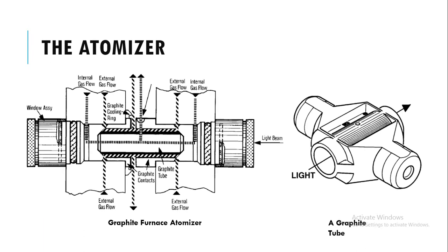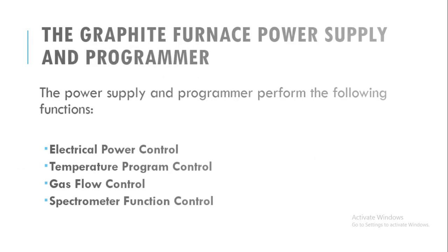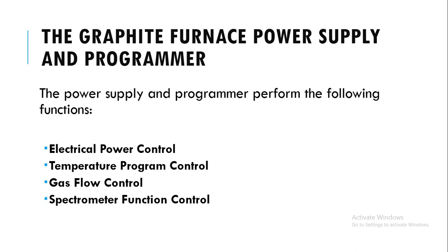The power supply and programmer of the graphite furnace atomizer perform the following functions: electrical power control, temperature program control, gas flow control, and spectrometer function control.